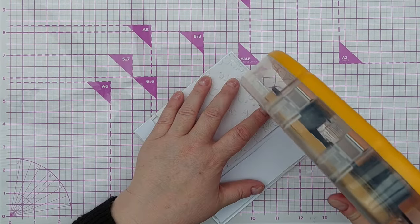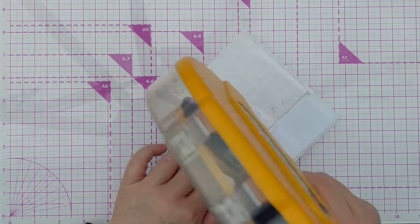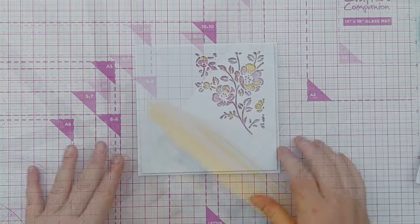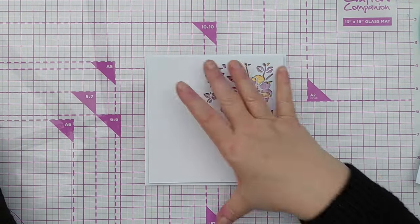I'm going to run my ATG tape runner over the back and then put this on my card front. Okay, so there we have a squarish card. I did chop a little bit off the bottom because this panel was a bit short.